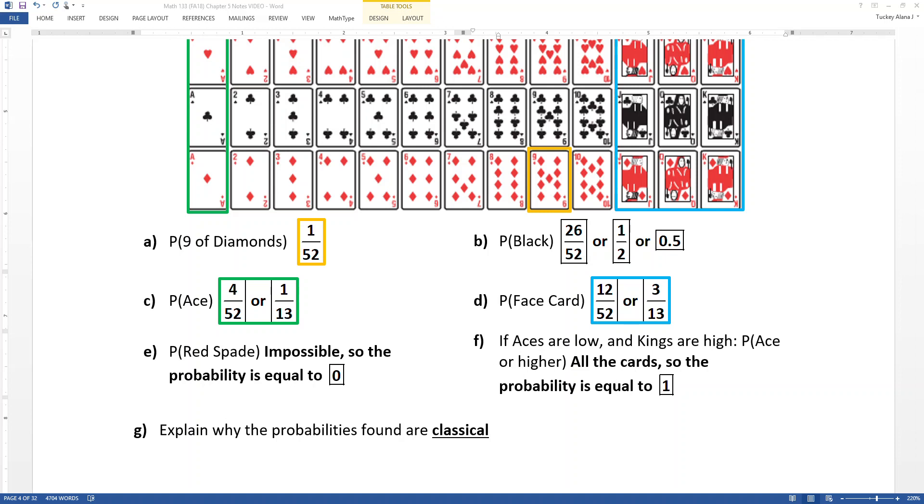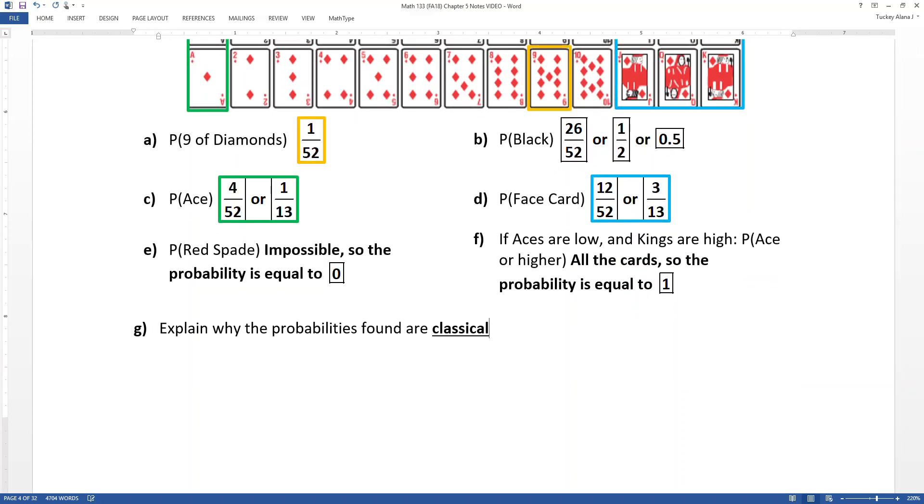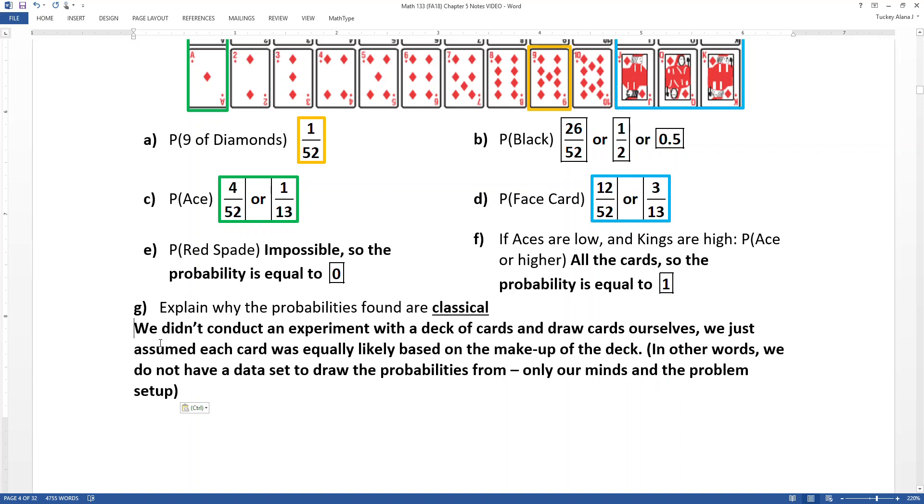Now all these probabilities are classical because we didn't conduct an experiment with a deck of cards and draw the cards ourselves. We just kind of imagined drawing a deck, right? You kind of imagine drawing a card out of a deck of cards and you kind of think, well, there's 52 and they're all equally likely. So you're making assumptions, right? And that's fine as long as you're not playing against somebody who's a professional card magician. So if you're not playing against a magician, you should be fine. We just assumed each card was equally likely based on the makeup of the deck. So we did not draw or we don't have a data set of to draw the probabilities from. We only used our minds and the problem setup.